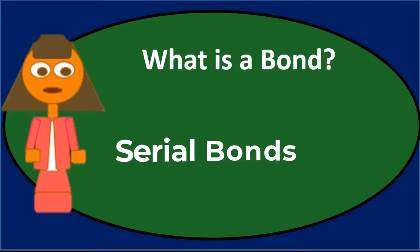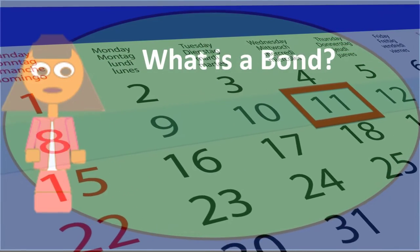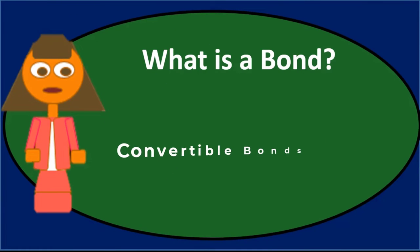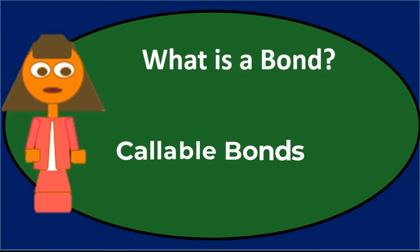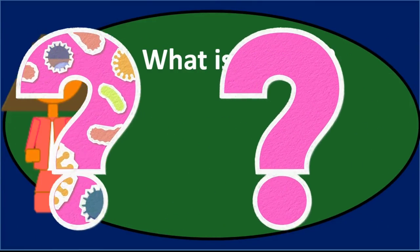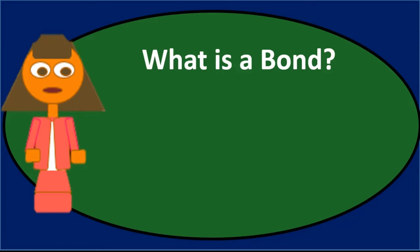We can also have serial bonds, which unlike a normal bond with one maturity date, have multiple maturity dates in a series in the future. We can have convertible bonds, which can be exchanged for shares of stock. We can also have callable bonds, which can be called back at a stated price before the maturity date. Listing these types is useful for picking up as many points as possible in a discussion question like this.